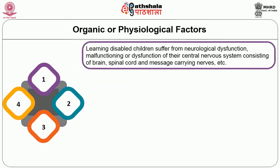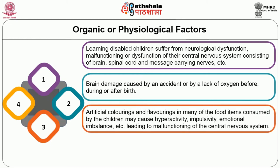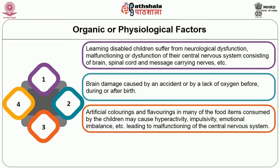The second cause is organic or physiological factors. Learning disabled children suffer from neurological dysfunction or malfunctioning of their central nervous system, consisting of the brain, spinal cord and message-carrying nerves. Brain damage caused by an accident or lack of oxygen before, during or after birth is another factor. Artificial colorings and flavorings in food items consumed by children may cause hyperactivity, impulsivity and emotional imbalance leading to malfunctioning of the central nervous system. Vitamin deficiency may also cause inability of the child's bloodstream to synthesize normal amounts for the functioning of the central nervous system.